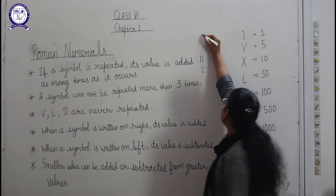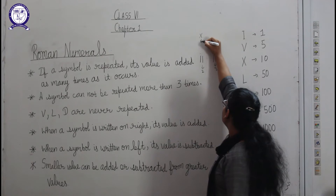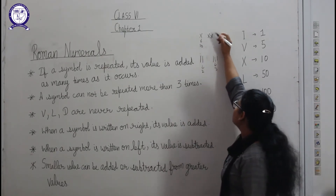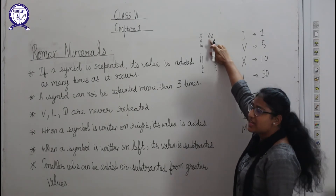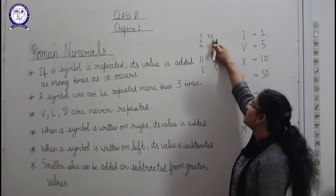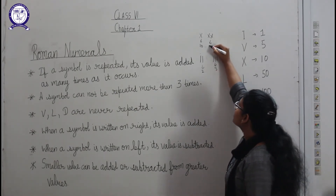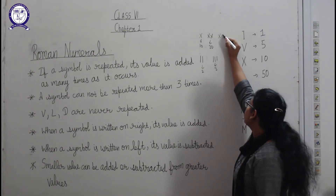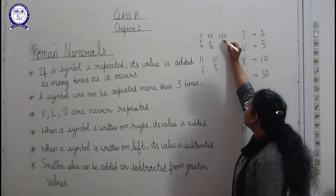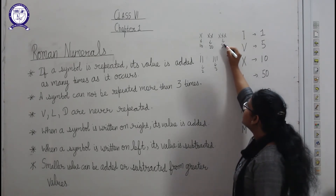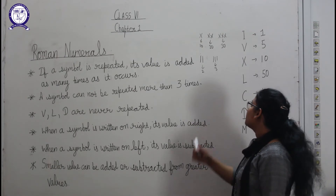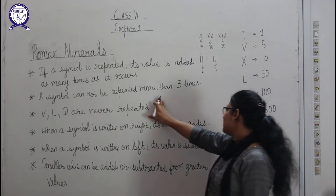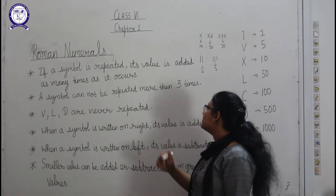Similarly, if we take X: written one time it is ten, written two times it is twenty, and written three times it is thirty. So if a symbol is repeated, its value keeps on adding.